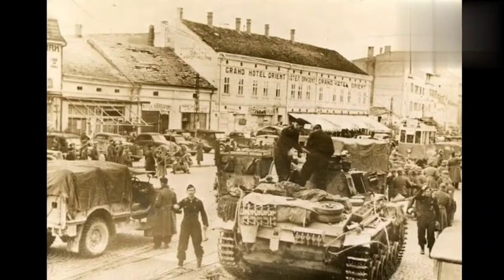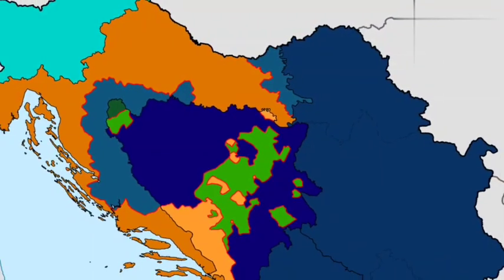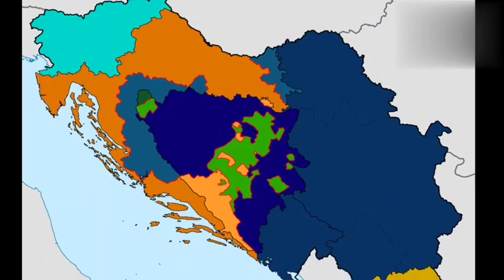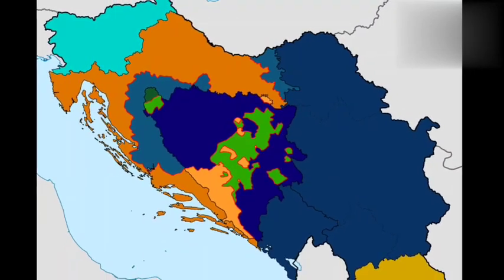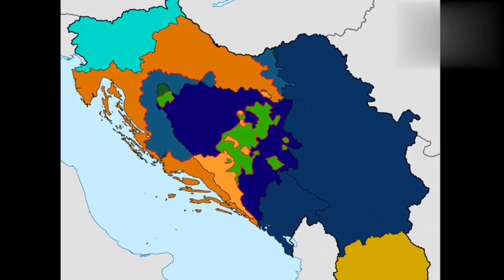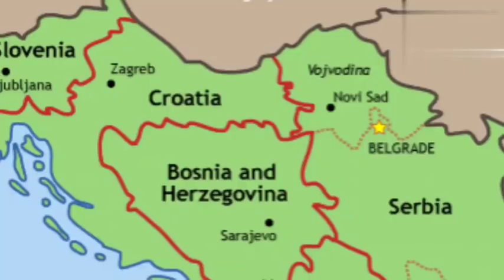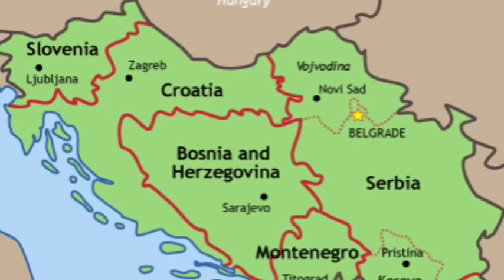The war was sparked by the breakup of the Socialist Federal Republic of Yugoslavia, a communist state that had been established after World War II. The war was characterized by ethnic and religious tensions between the various peoples of Yugoslavia, and involved several countries, including Serbia, Croatia, Bosnia and Herzegovina, and Kosovo.